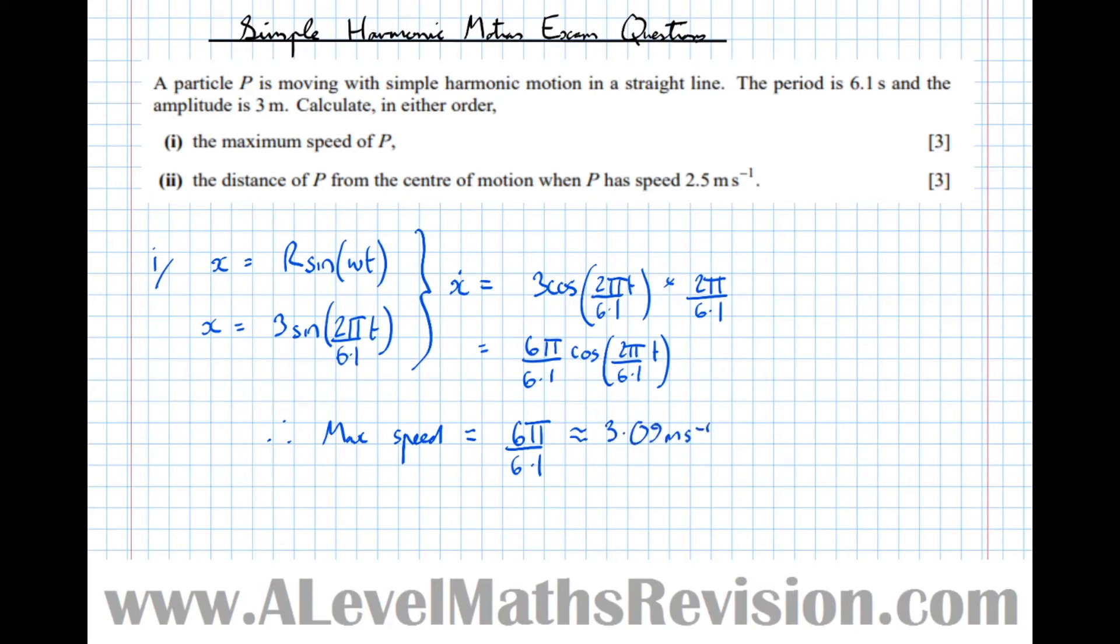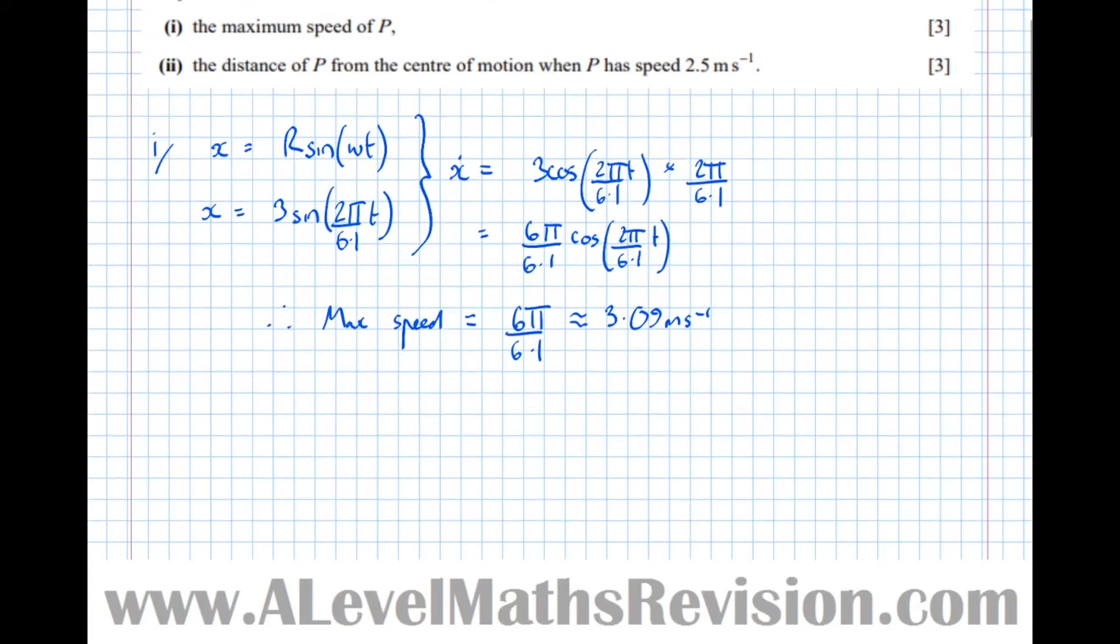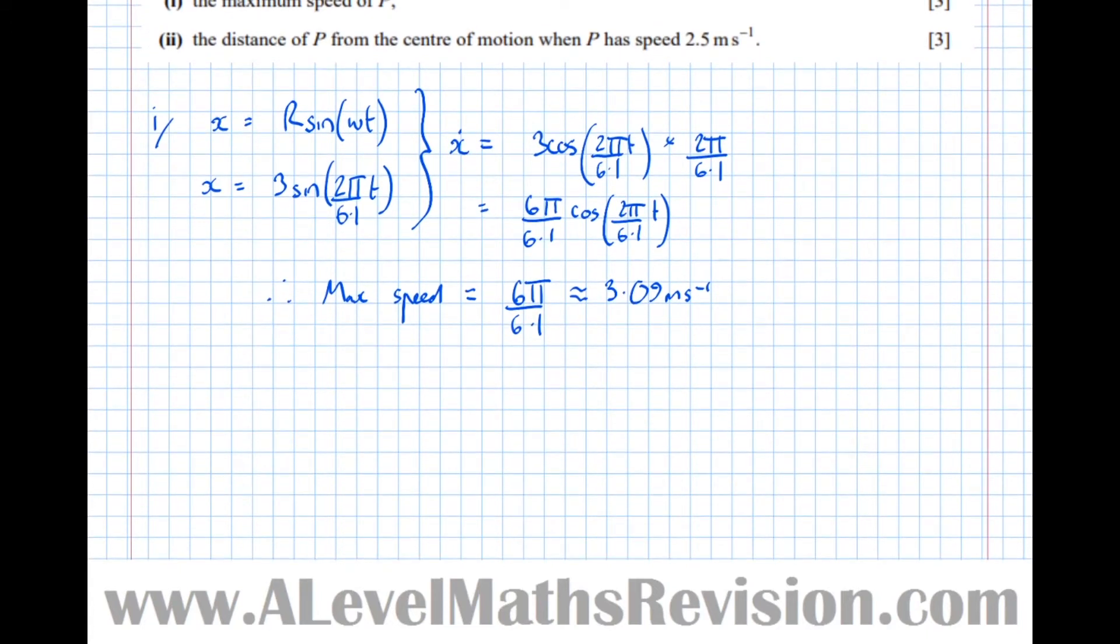Next it asks us to find the distance of P from the centre of motion when it has speed 2.5 metres per second. First let's find the time when it has that speed.